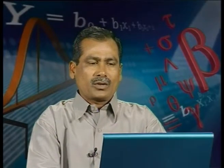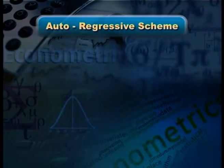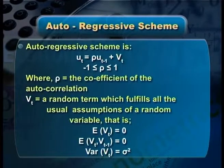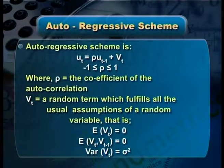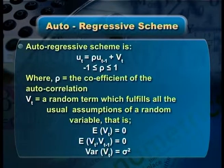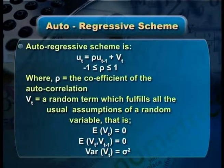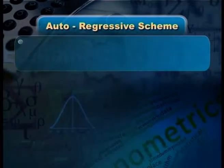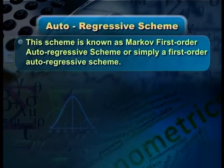We are also supposed to know the autoregressive scheme. The autoregressive scheme in general can be written as ut = ρ·u(t−1) + vt, where the value of ρ lies between −1 and +1. Here ρ is the coefficient of autocorrelation, vt is a random term fulfilling the assumptions: E(vt) = 0, E(vt·v(t−1)) = 0, and Var(vt) = σ². This scheme is known as the Markov first-order autoregressive scheme.